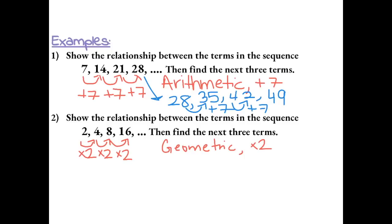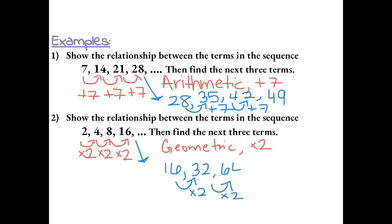To find the next three terms, we take our last term, 16, and multiply it by 2. So the next term is 32. Then we multiply by 2 again to get 64. And multiply by 2 again to get 128.